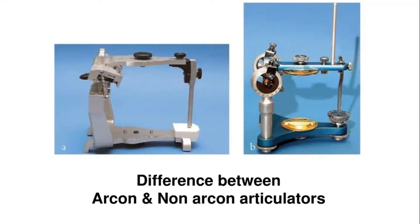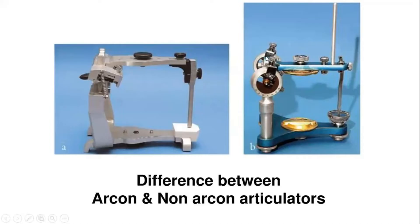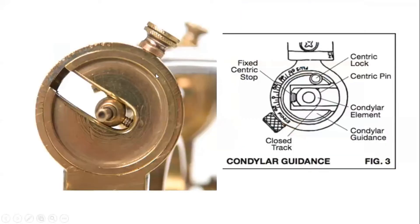Today we will learn about arcon and non-arcon articulators — what is the difference between them and why do we need arcon articulators. But before that, let's understand the structural anatomy of the condylar assembly. The condylar assembly is made of two parts: the condylar element and the condylar guidance, which includes the condylar tract. These are the two most important components of the condylar assembly.